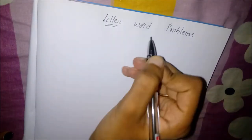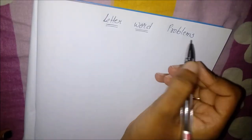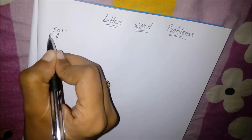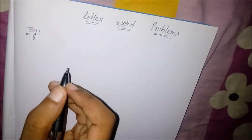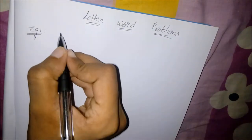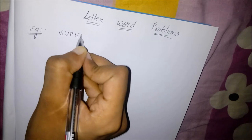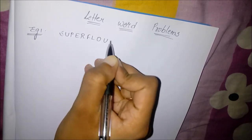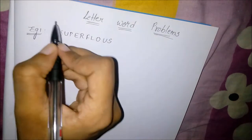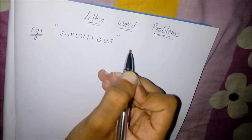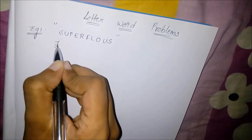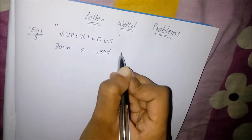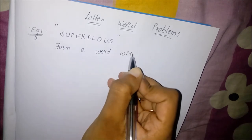Hi guys, welcome to my channel Karika. Today's topic is about letter word problems. Coming to the first example, the question given is: if it is possible to form a word with the first, fourth, seventh, and eleventh letters in the given word, we have to find out the first letter of that formed word.